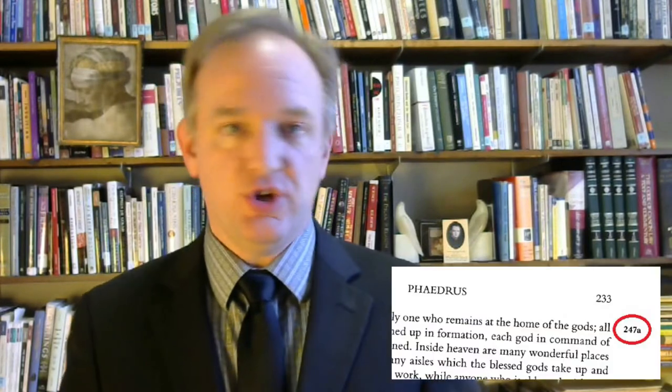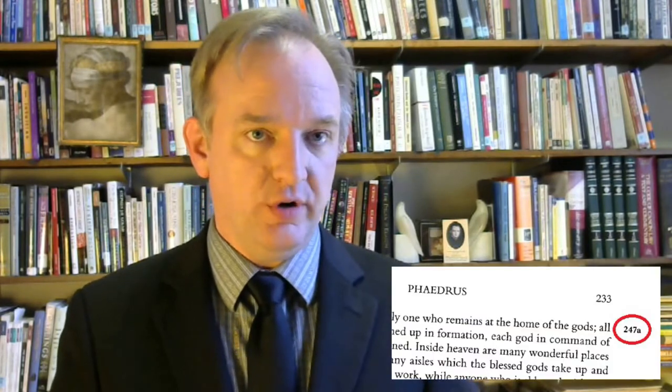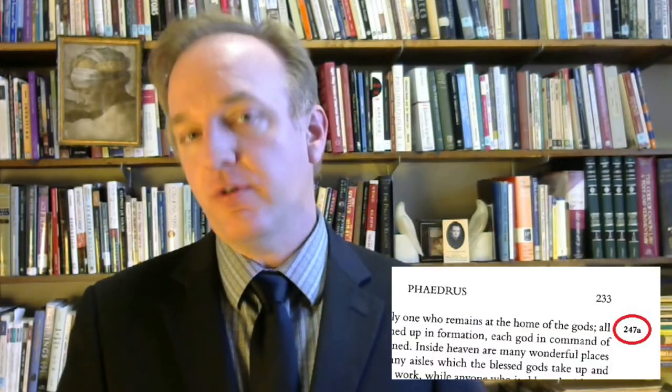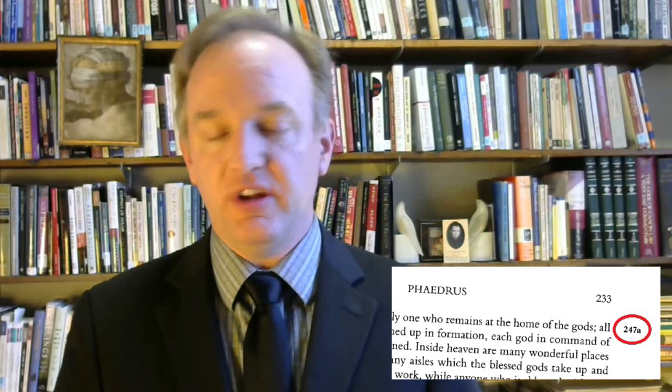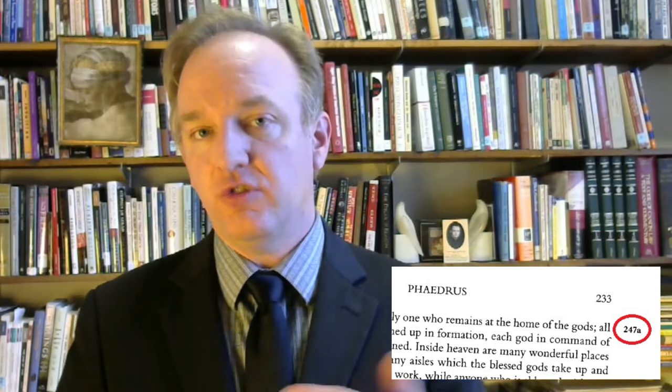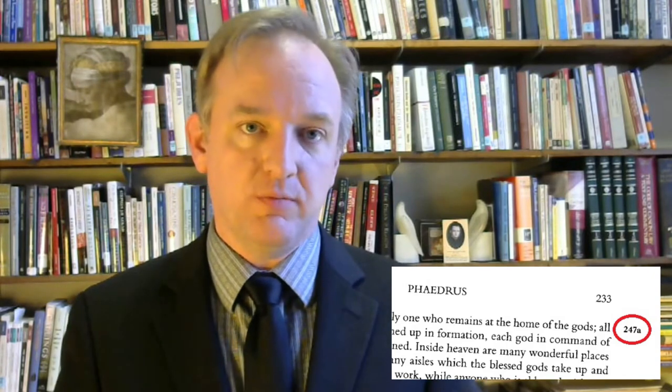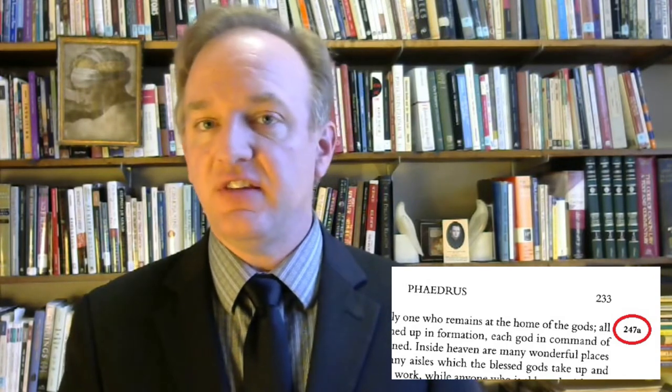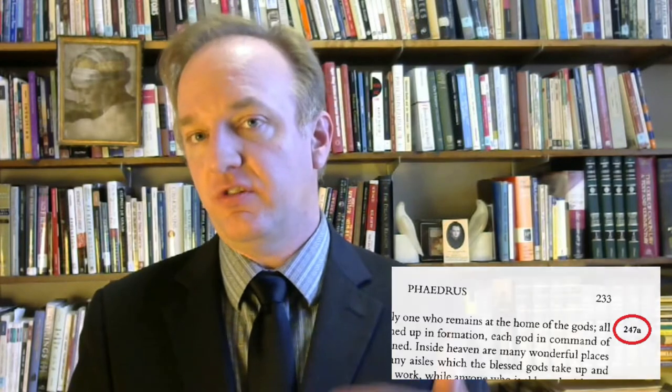When you cite Plato in a paper, cite by dialogue title and Stephanus number. This is the number and letter in the margin of most editions of Plato's works. It refers to the page and line numbers from an edition of Plato's complete works published in 1578 by Henricus Stephanus of Geneva.